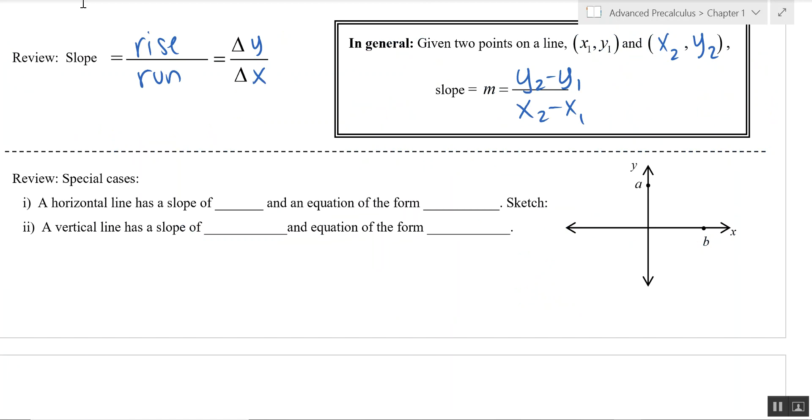Alright, special cases are horizontal lines and vertical lines. Please do not forget which one is which. If you are ever in doubt, think about this diagram right here. A horizontal line has a slope of zero. So, horizontal line has a slope of zero and is always going to be y equals some constant.